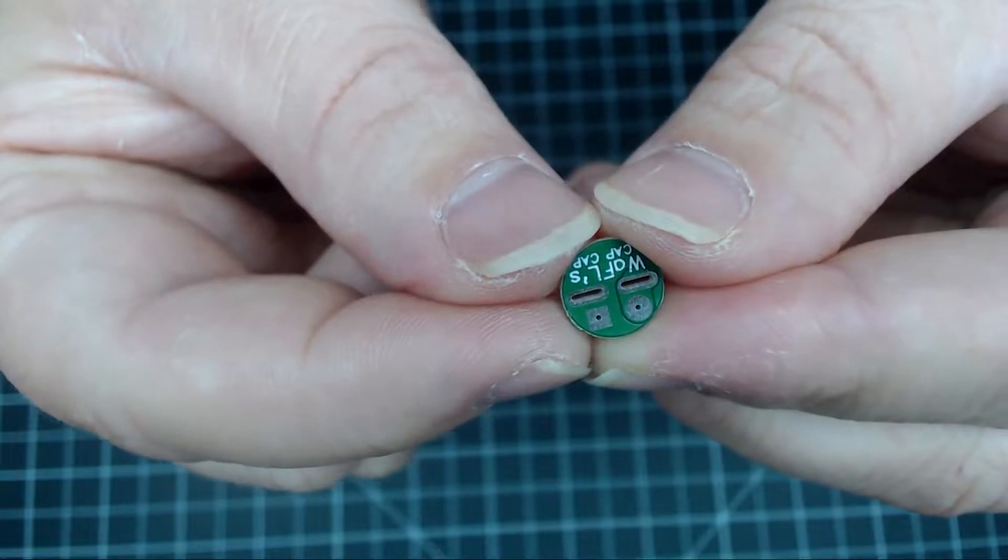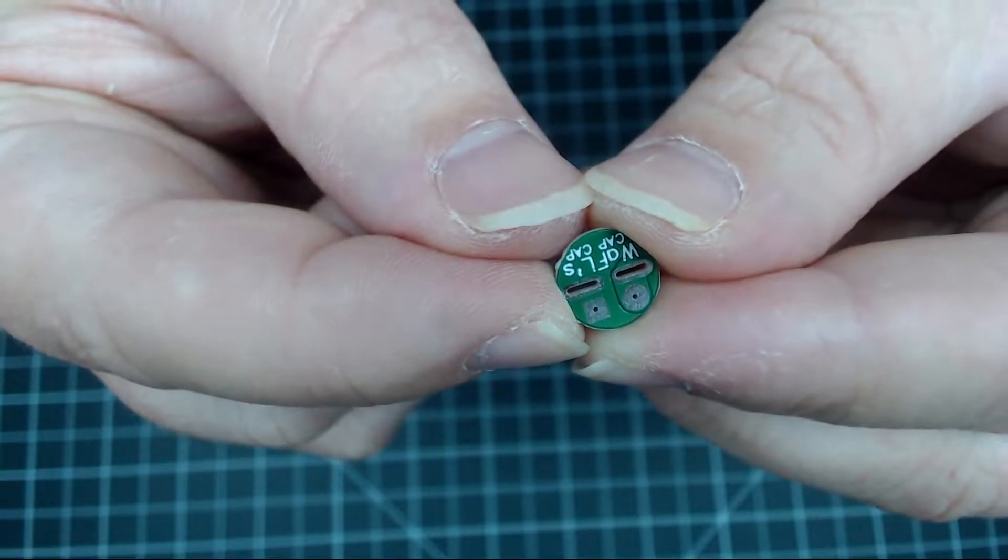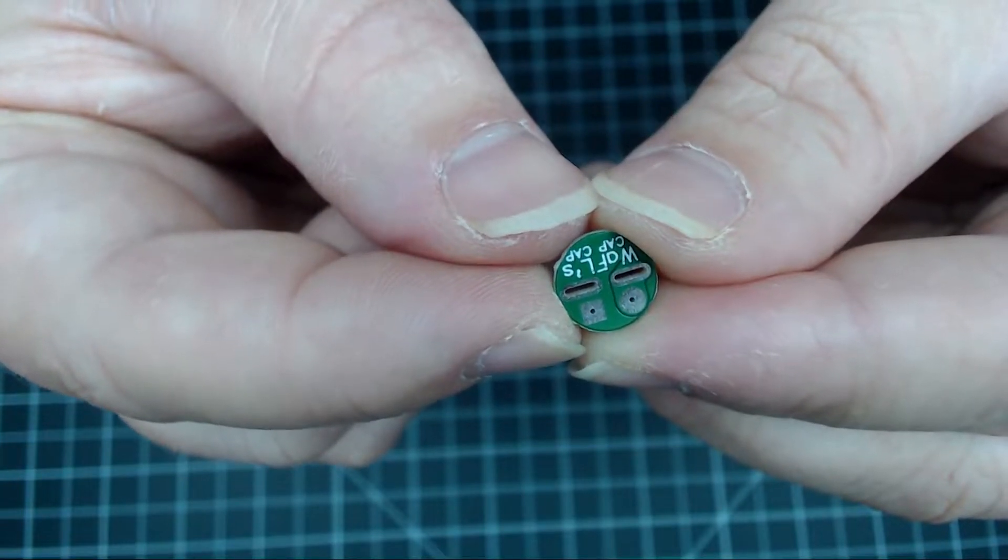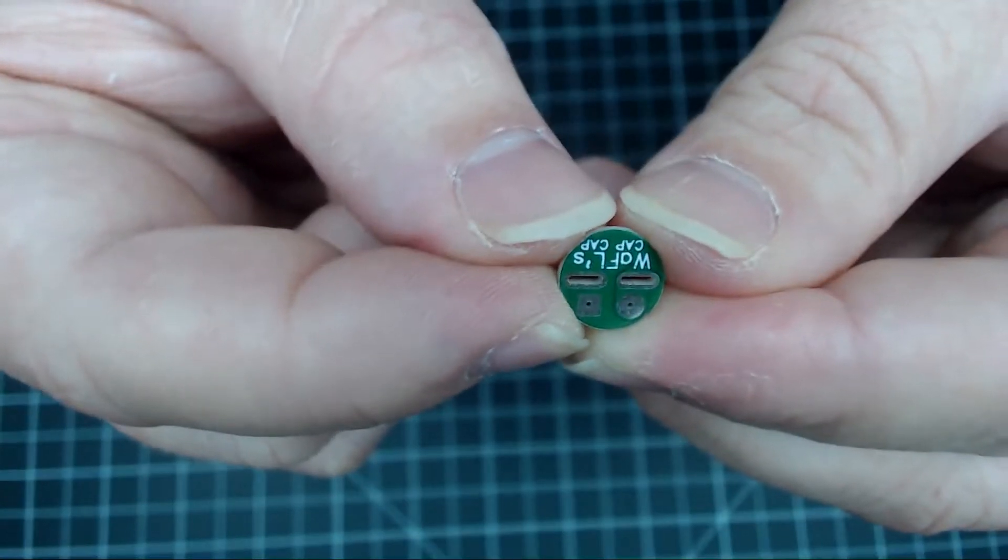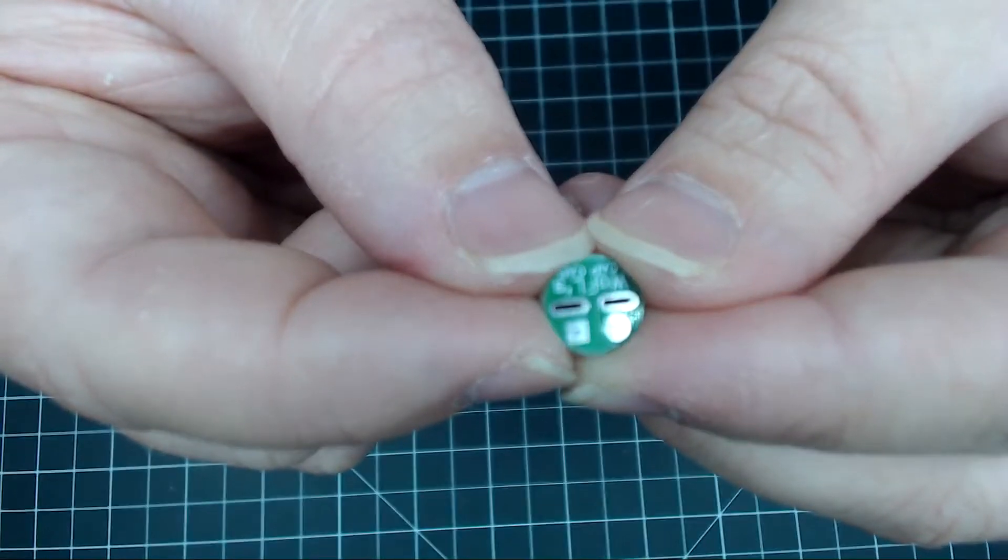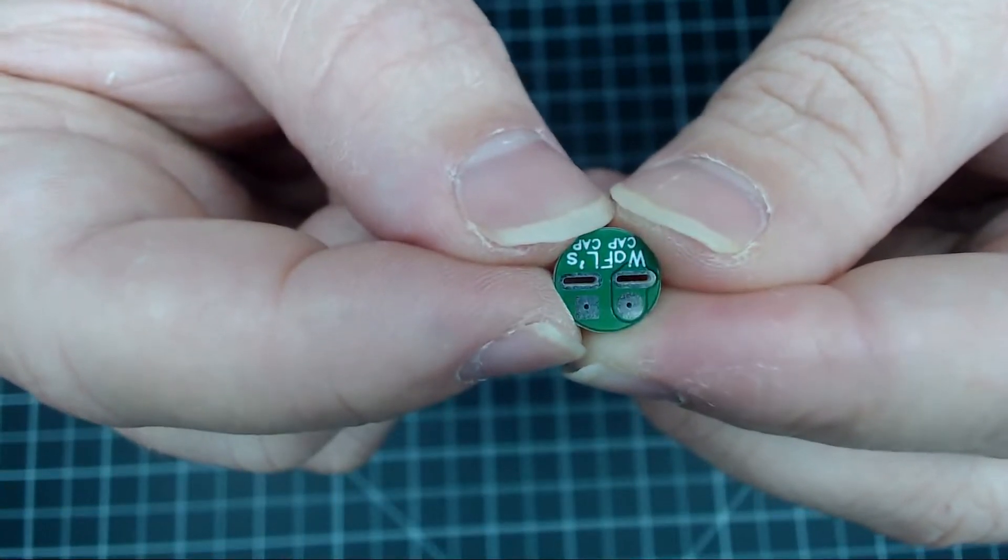I want to show these little boards, I guess they're called waffle cap caps. Basically, they provide little soldering pads to solder your wires on your capacitors.